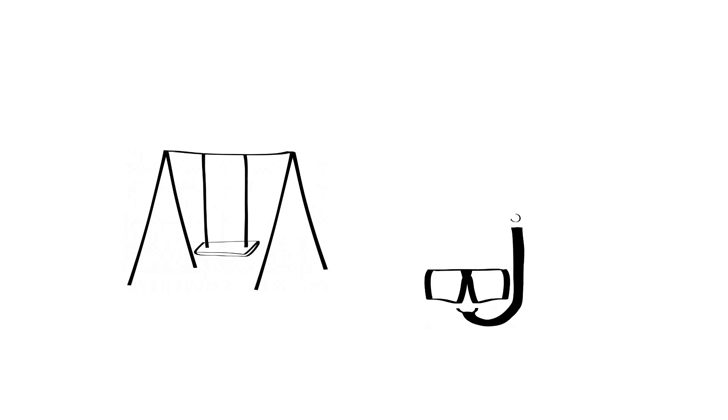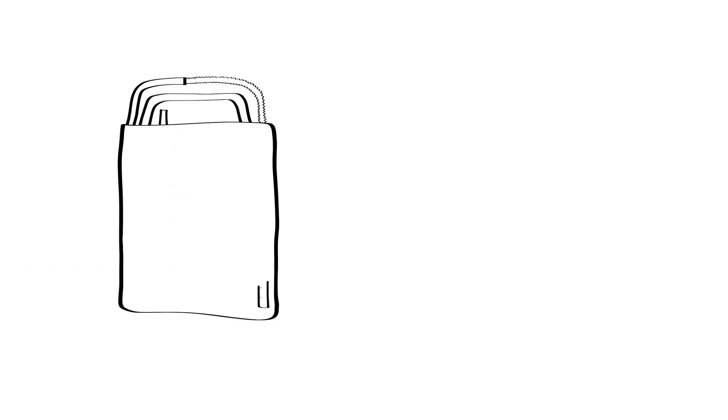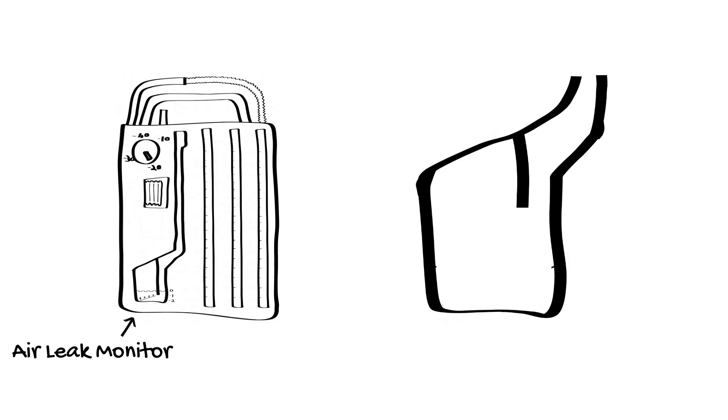When documenting chest drains, we should record if they swing or bubble. If the drain is bubbling, then there is either an air leak from the pleural space or a leak somewhere in the tube connections. The bubbling is described as intermittent or continuous, depending on the volume of air that is coming out. Some drains feature a graduated air leak monitor in the underwater seal chamber. This allows a numerical value to be assigned based on the severity of air leak from one to five.